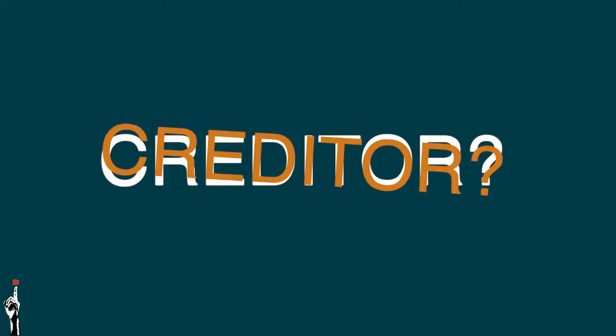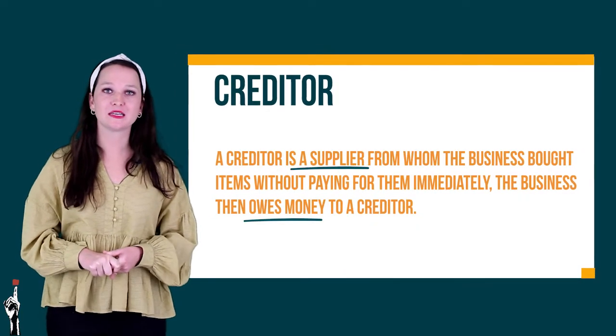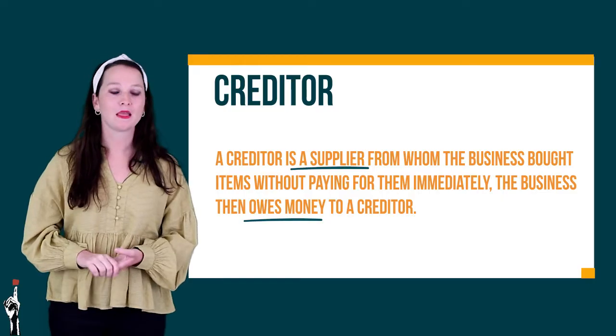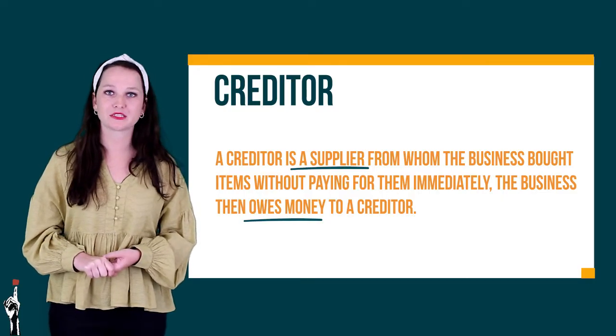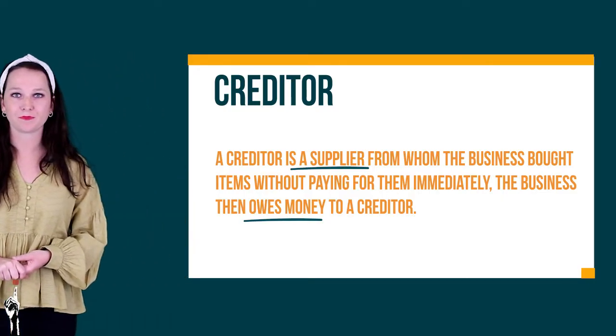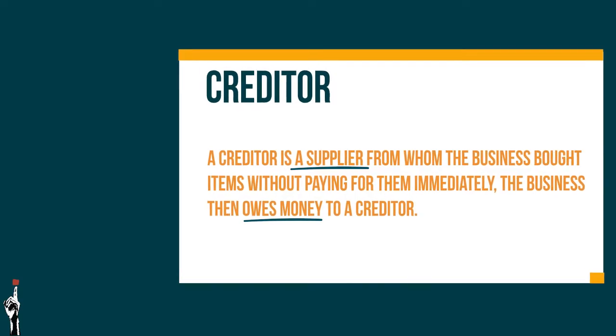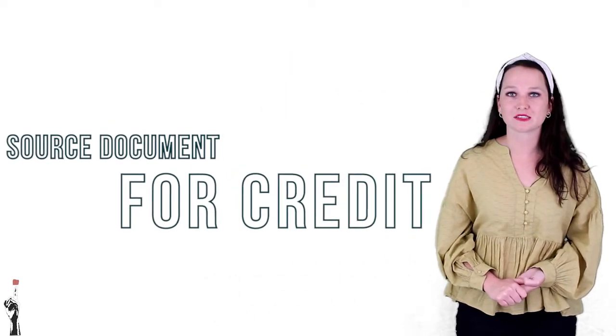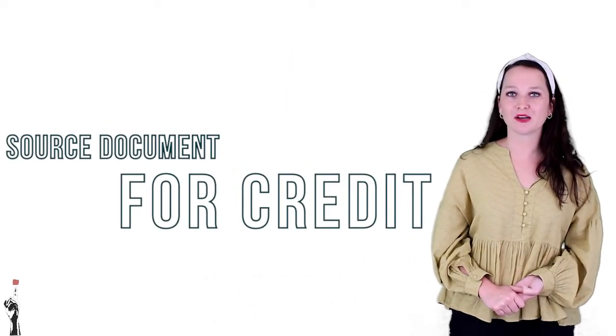Let's quickly recap. Can you still remember what a creditor is? A creditor is a supplier from whom a business buys items without paying immediately. The business then owes the creditor money. In the previous lesson, we mentioned the source documents for creditors. Can you still remember what it was?